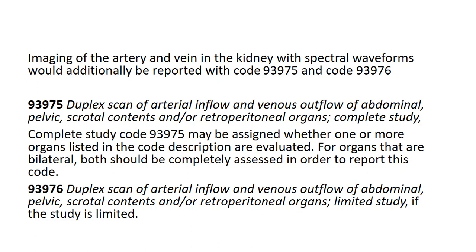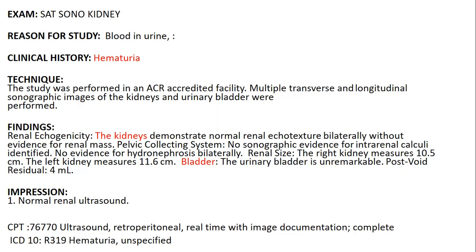If anything is missing, you can directly code 93976. Here is a sample report: it documents a complete ultrasound kidney exam with two kidneys examined, the urinary bladder, and a renal condition with hematuria. This is a complete study — everything is documented to support the complete ultrasound CPT code 76770. The ICD codes are R31.0 and R31.9 for hematuria.